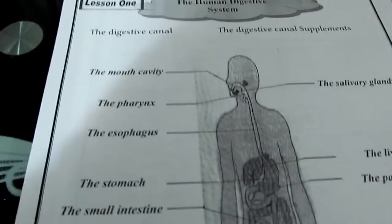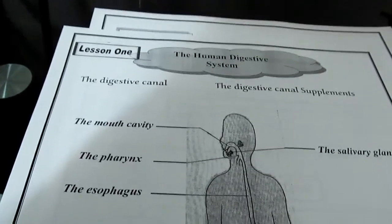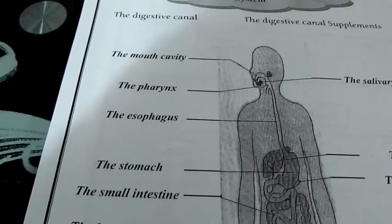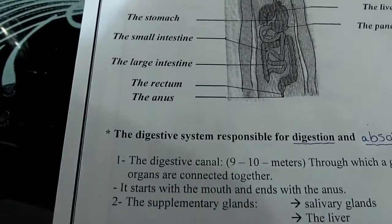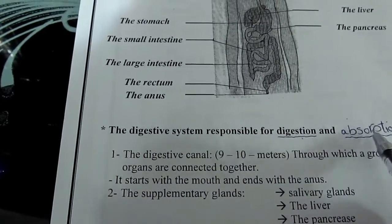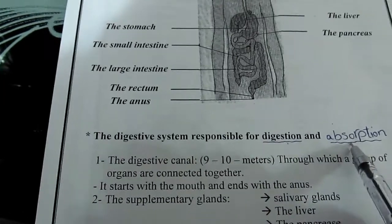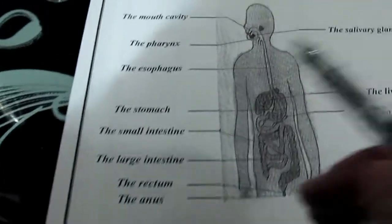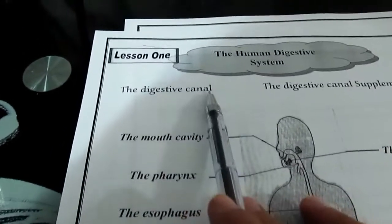In the second session we will learn about the human digestive system. As we know previously, its functions are digestion and absorption. It consists of two groups: number one, the digestive canal, and number two, digestive canal supplements.